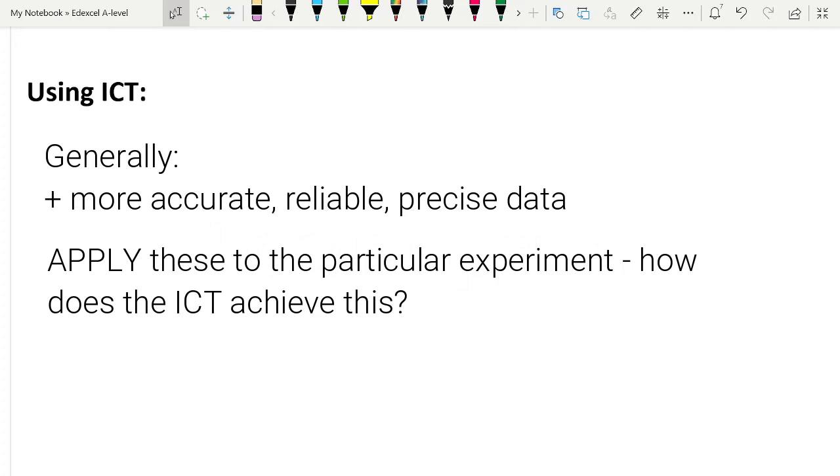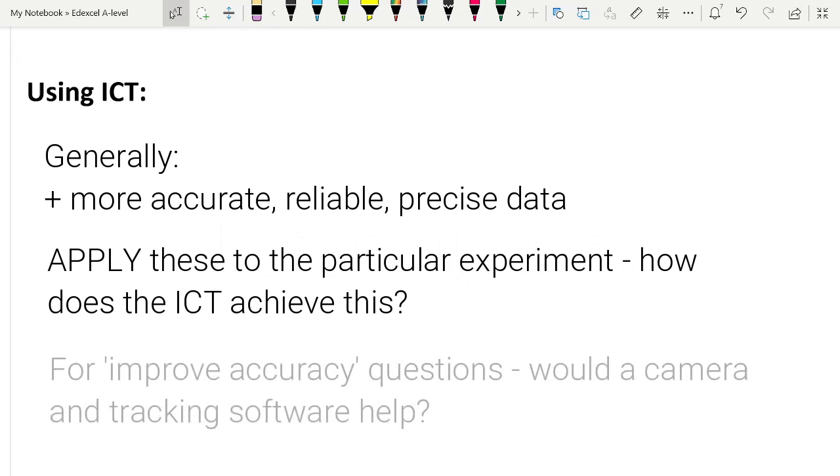Or it could be an experiment that is completely unfamiliar to you and you're using a camera or light gates to do that. Unless you're absolutely desperate, do not just trot out what makes your readings more accurate. You can say it will make your readings more accurate, but you've got to justify that in terms of the actual experiment in front of you.